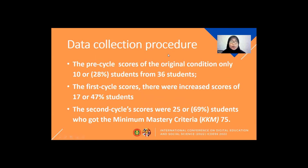Data collection procedure. The pre-cycle scores showed only 10 or 28% students from 36 students passed. The first cycle scores showed increased results of 17 or 47% students. The second cycle scores were 25 or 69% students who got the minimum mastery criteria KKM 75.